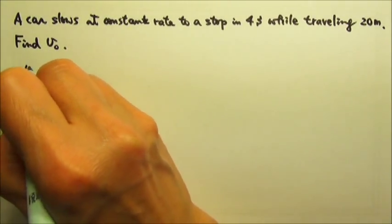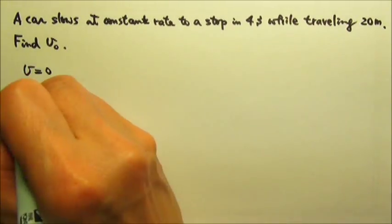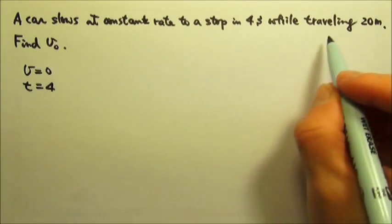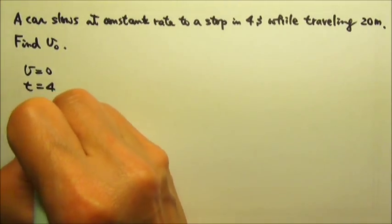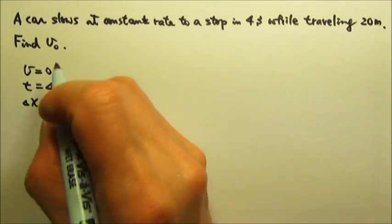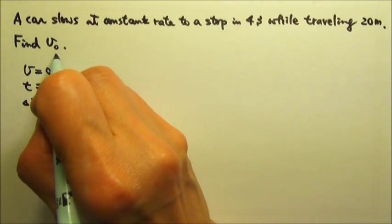To a stop, that means the final velocity is zero. The time is 4 seconds. The displacement is 20. We know three things, so we can certainly find the initial velocity.